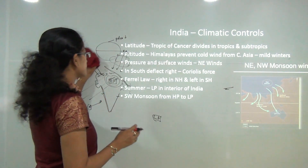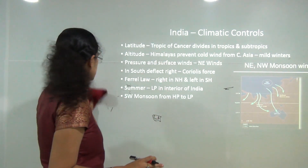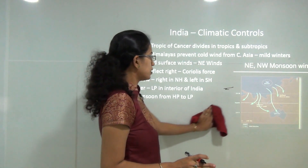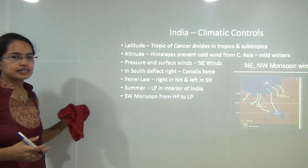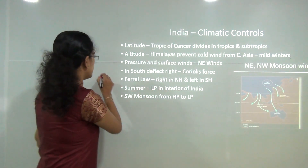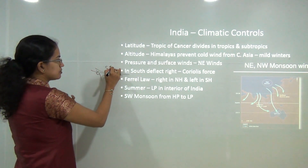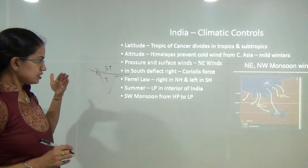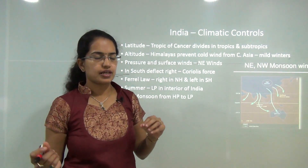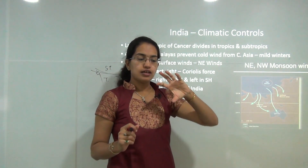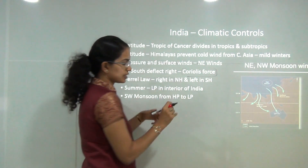Coming specifically to India: the role of the Himalayas has already been discussed. Regarding latitudinal extent, the Tropic of Cancer divides India into tropical and subtropical regions. An important thing to understand in climatology is the direction and phenomena of wind movement, including the Coriolis force and the pressure gradient force.